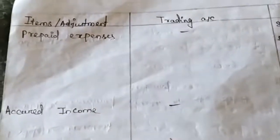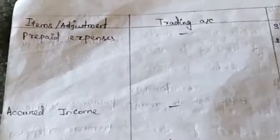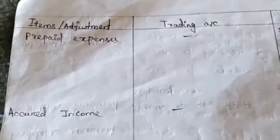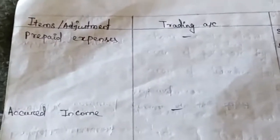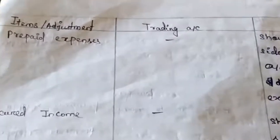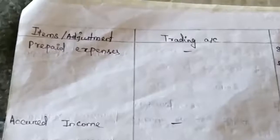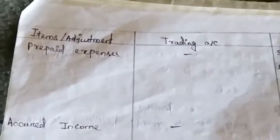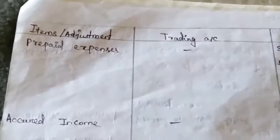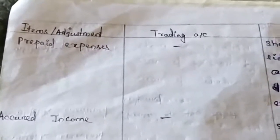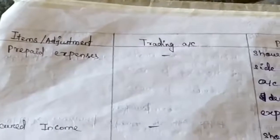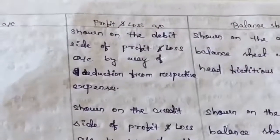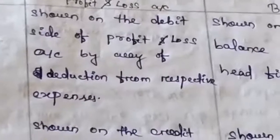Next adjustment is prepaid expenses. Prepaid expenses are expenses paid before the due date — the opposite of outstanding expenses. Outstanding means the expense is not yet paid but the due date has passed; prepaid means the expense is paid before due date. The first treatment: since it represents an expense, it must be shown on the debit side of the profit and loss account by way of deduction from the respective expenses, because the prepaid amount relates to the next accounting year.